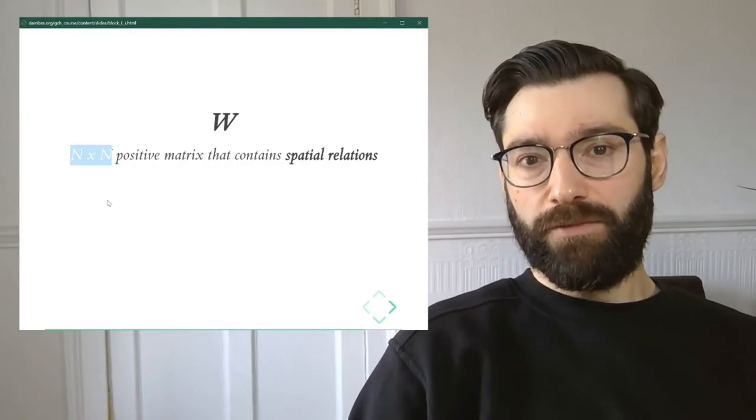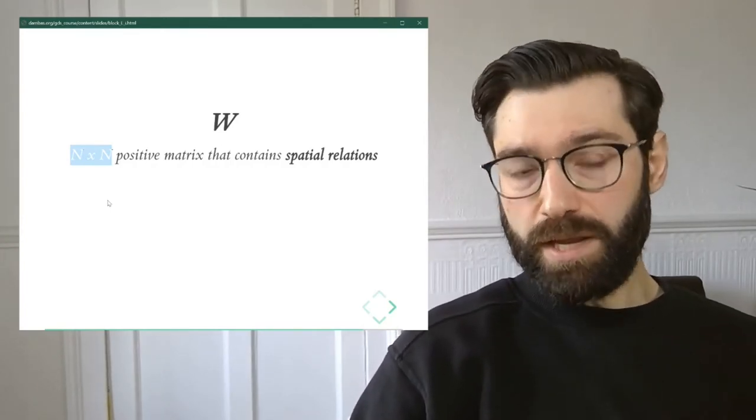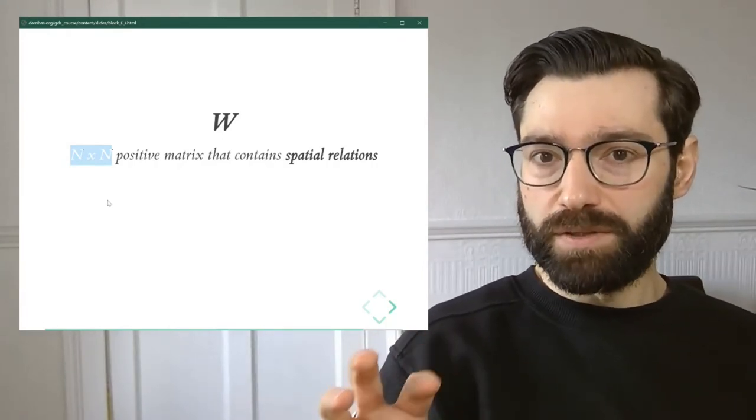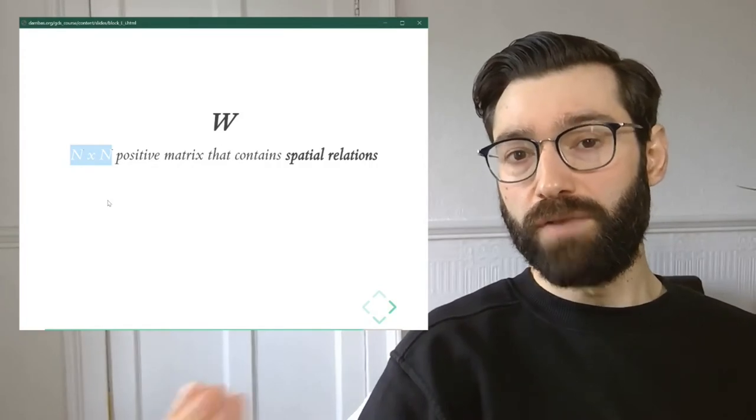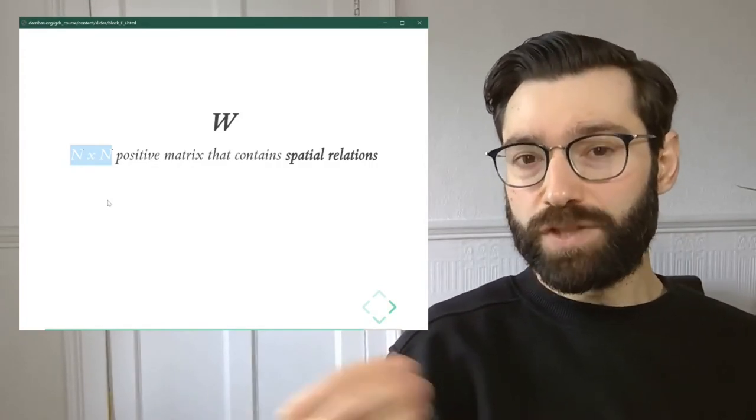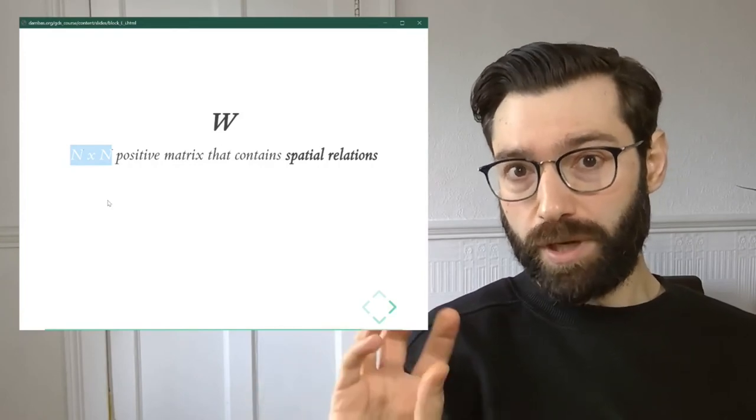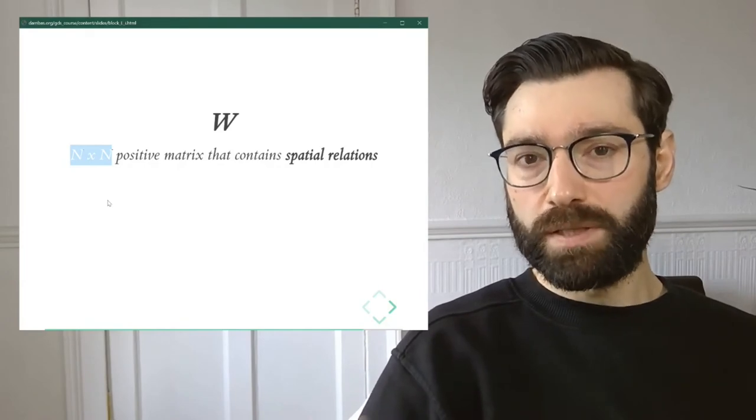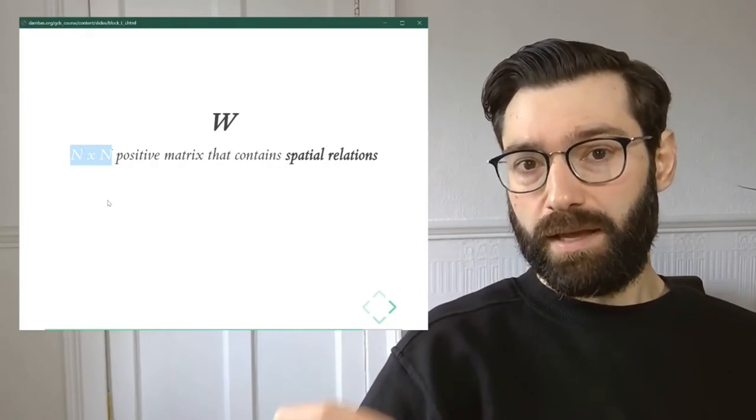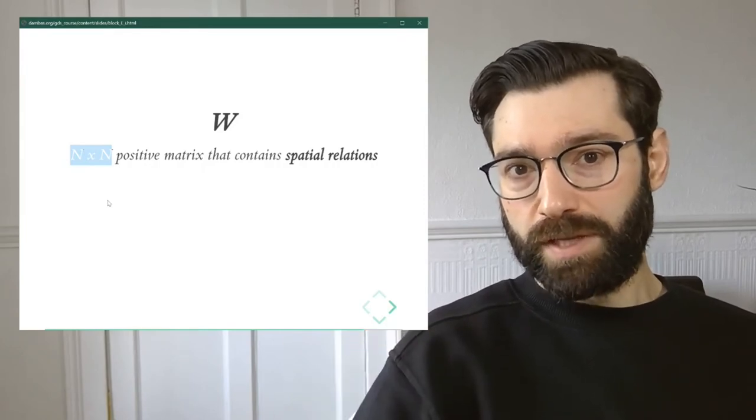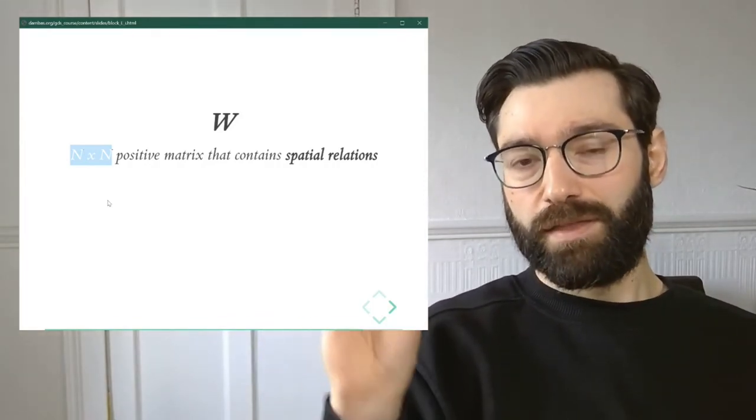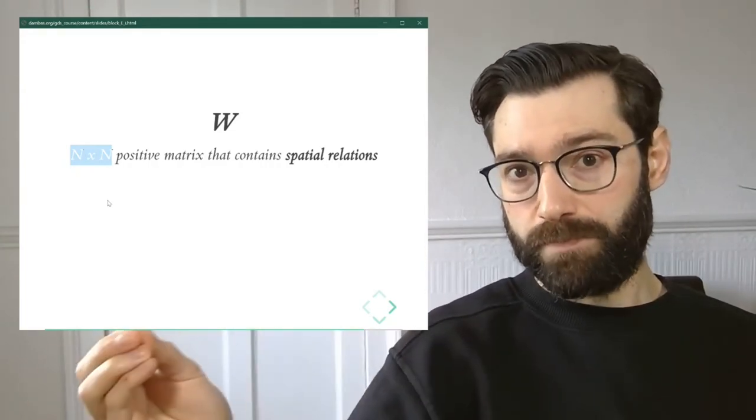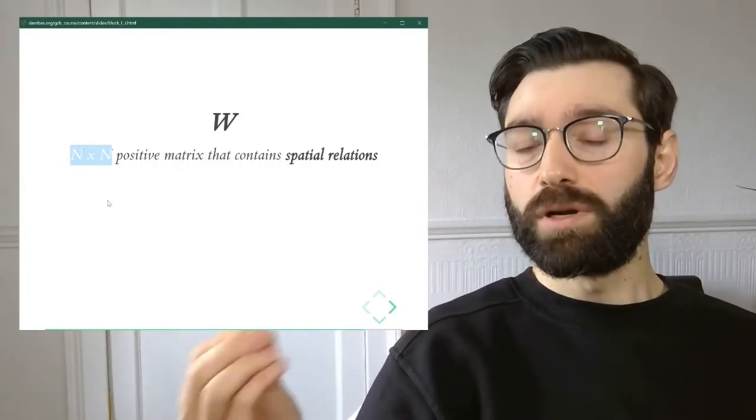Now, the key thing that differentiates a spatial weights matrix from any other positive matrix is that it contains spatial relations, but these spatial relations are converted into values into quantities. And more generally speaking, the trick we're going to use to convert spatial relations into values is we're going to say at the simplest case, if you are a neighbor of another observation, we're going to put a non-zero number. And if you're not a neighbor, we're going to set a zero.